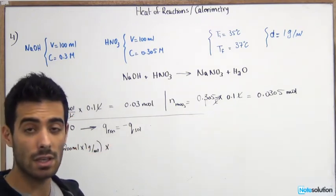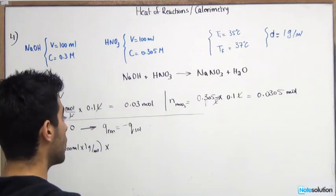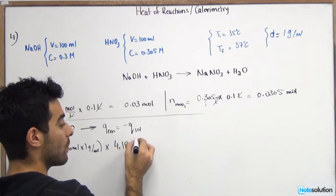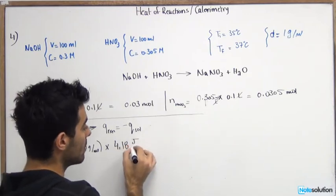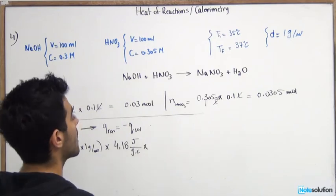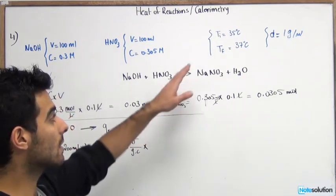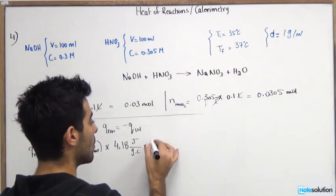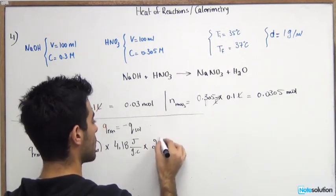The next thing is the specific heat of water. Specific heat of water, which is something that you should have memorized by now, is 4.18 joules per gram Celsius times the delta T. So we said that the T final is 37 degrees and the T initial is 35 degrees.